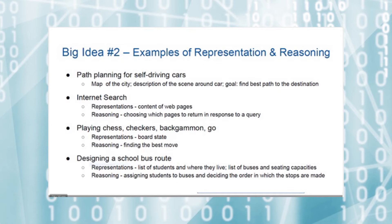Here are some more examples of representation and reasoning. In a self-driving car, the representation would include a map of the city and a description of the scene around the car — that is, the other cars that are nearby at the moment. The reasoning algorithm's job is to find the best route to the destination and determine when it's safe to pass or change lanes. When you use an internet search engine like Google or Bing, the representation is a description of the various web pages the search engine has indexed, and the reasoning algorithm tries to find those web pages that are the best match for the query that you've submitted.